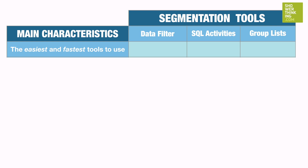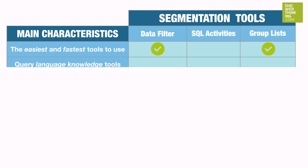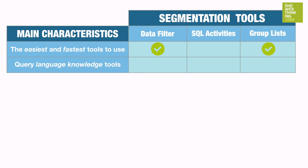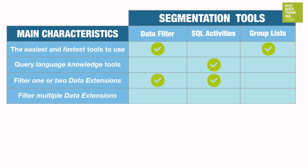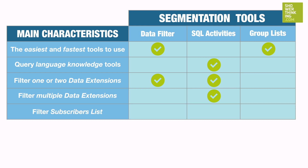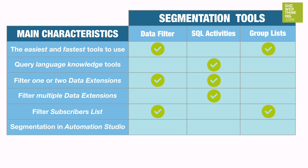The easiest and fastest tools to use in Marketing Cloud are data filters and group lists. SQL queries are a more complex tool, and you must have knowledge of the query language. To create a segmentation in one or two relational data extensions, you can use a data filter or SQL activity. In the case that you want to segment multiple data extensions at the same time, you can use SQL queries. If you want to filter a list of subscribers, you can use a group list or a data filter. When applying segmentation filters in Automation Studio, you can do it with a data filter or an SQL query.